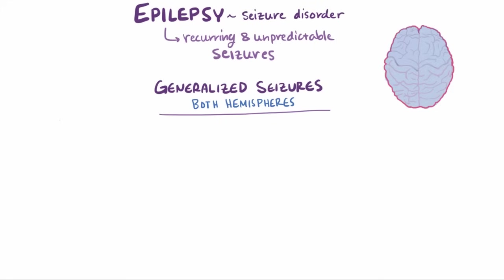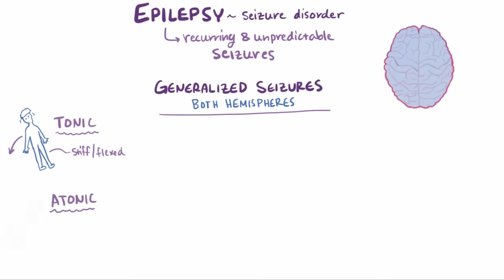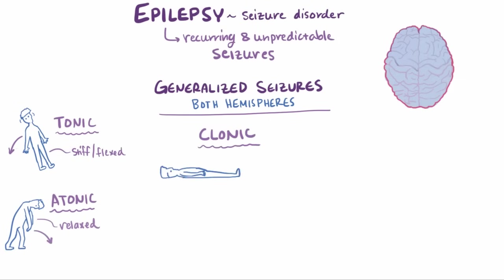There are subcategories of generalized seizures as well. One subtype is a tonic seizure where the muscles all of a sudden become stiff and flexed, which can cause the patient to fall, often backwards. They can also be atonic, where the muscles suddenly relax and become floppy, causing the patient to fall forward. Seizures can also be clonic, where there are violent muscle contractions, also known as convulsions.